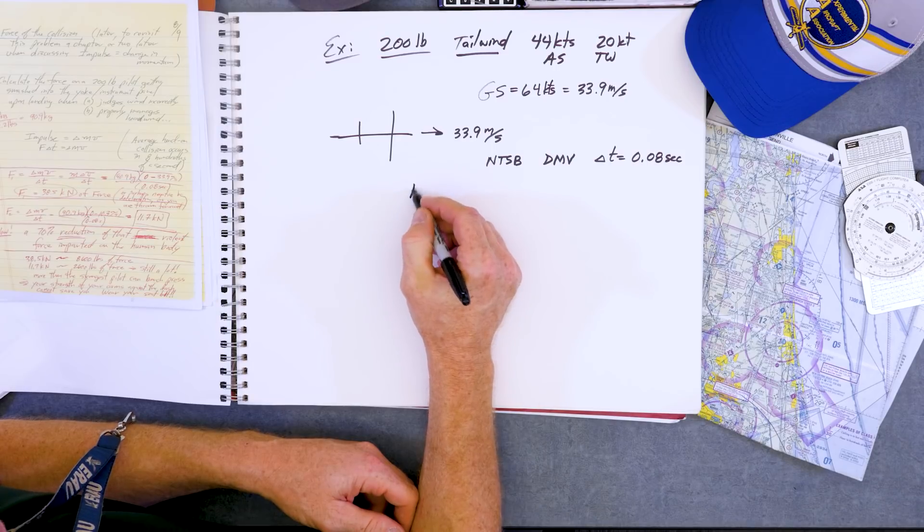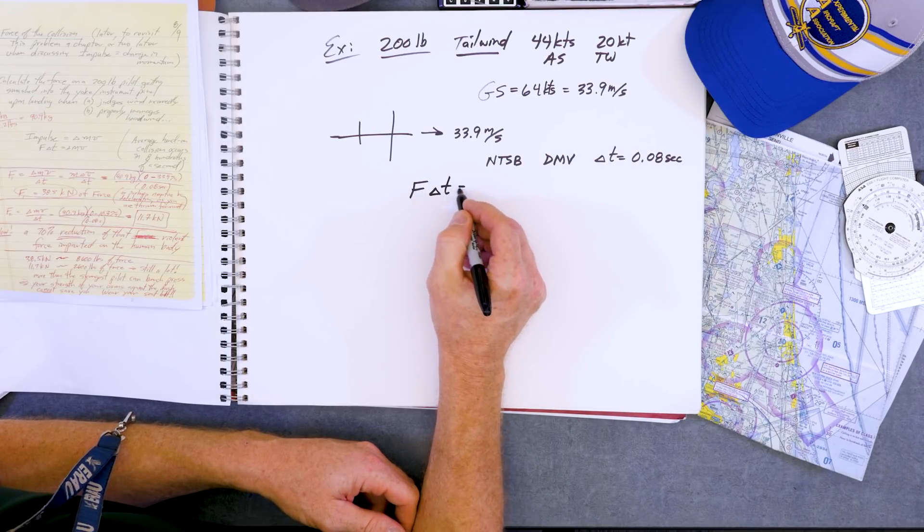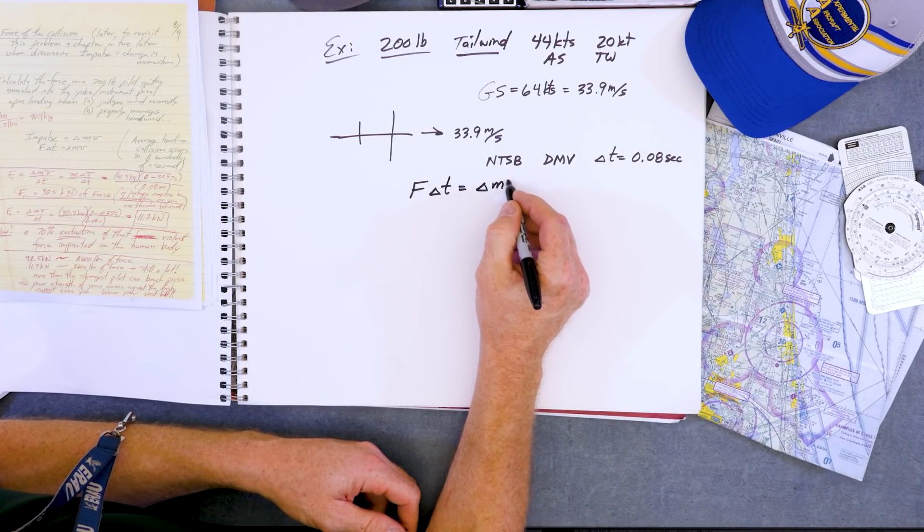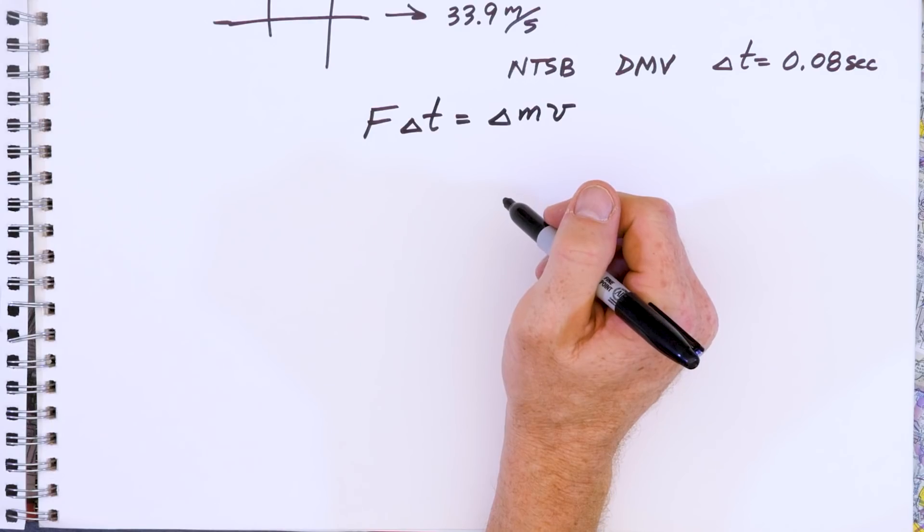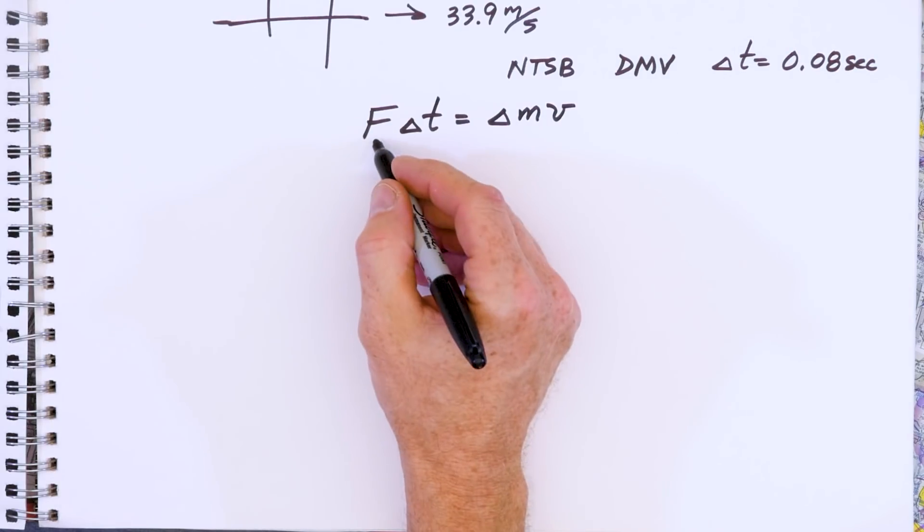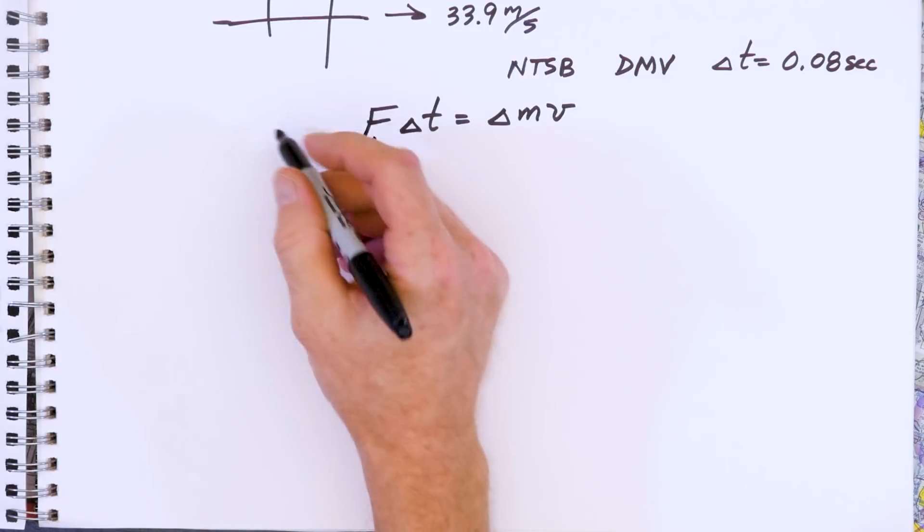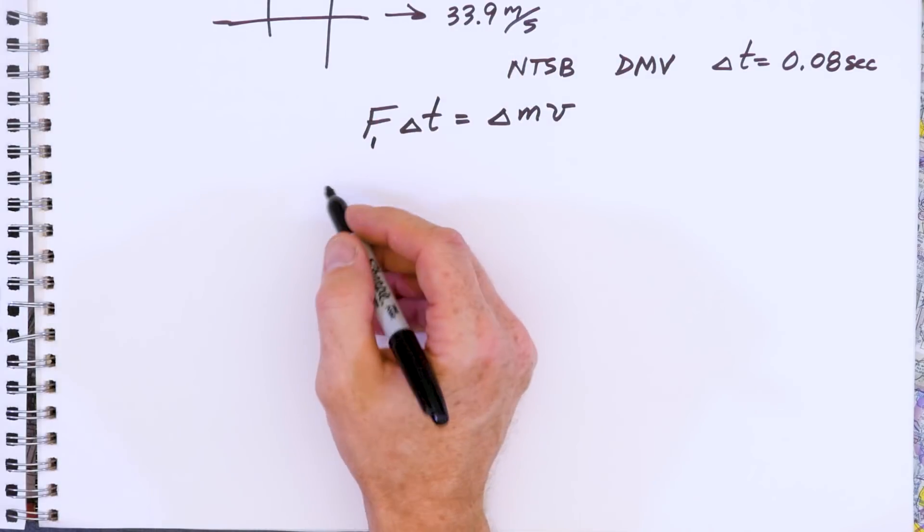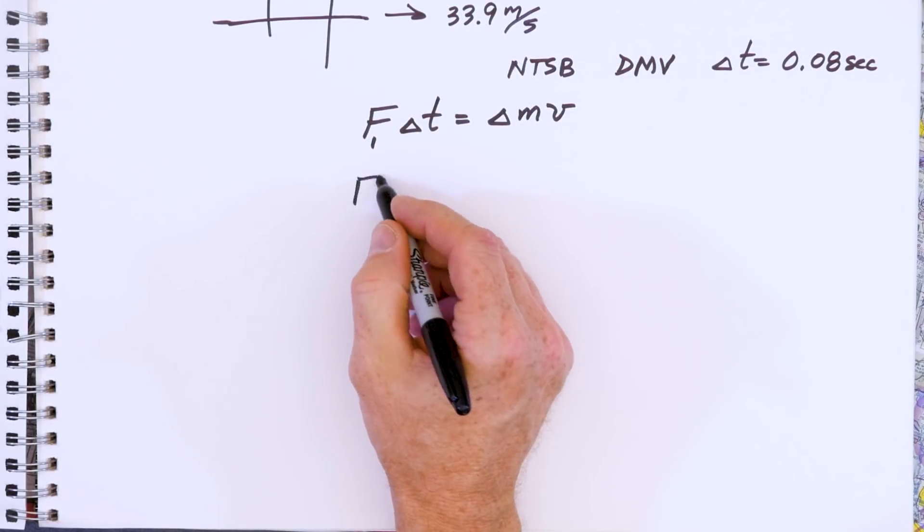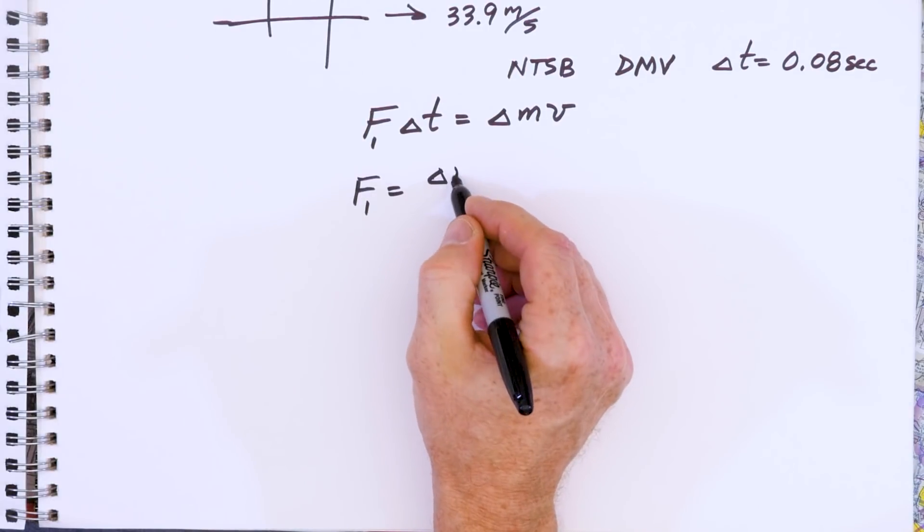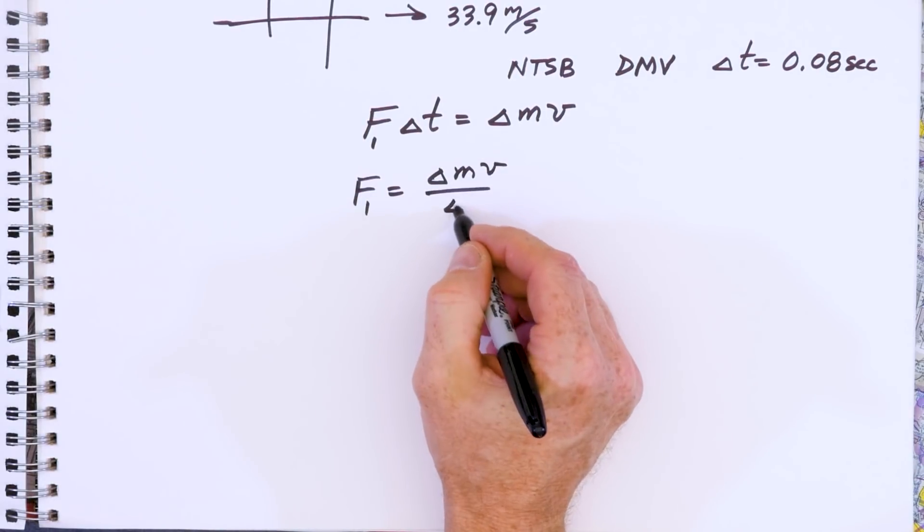Okay, so let's do some calculations now. F delta T is our impulse. Delta MV is our momentum. So we're going to rearrange and find this force. F1 for the pilot that has this tailwind and incorrectly lands with a large kinetic energy, large momentum. So I'll say delta MV over delta T.